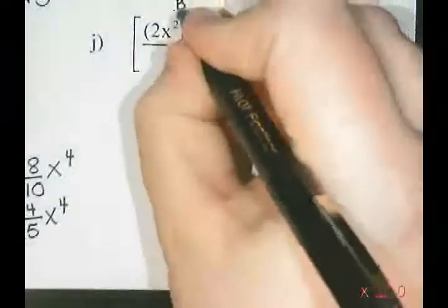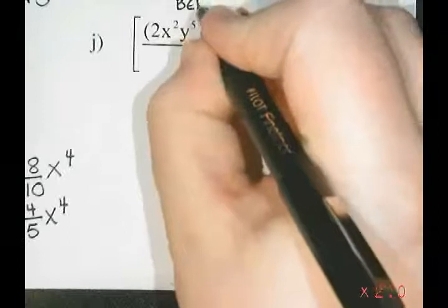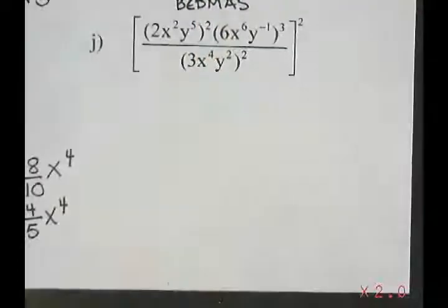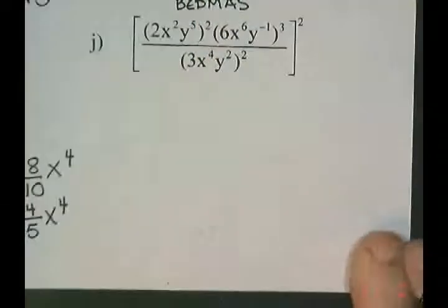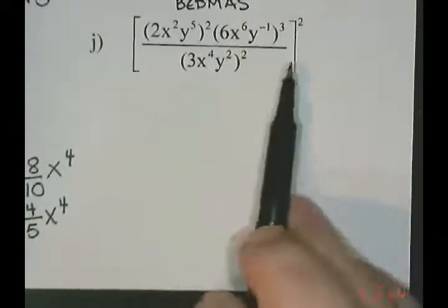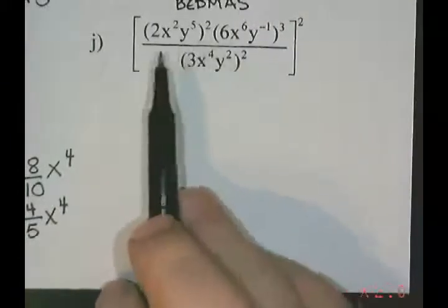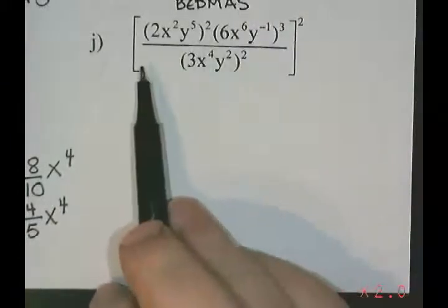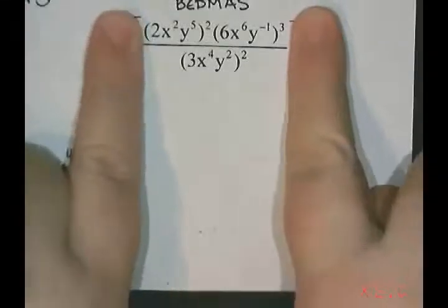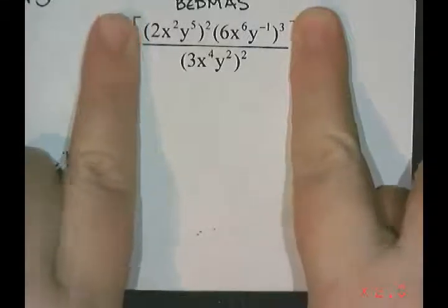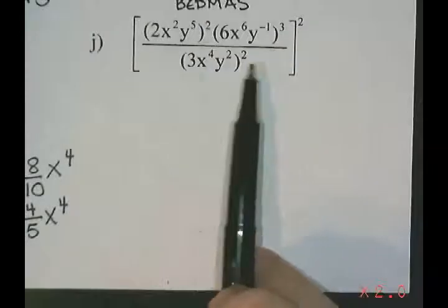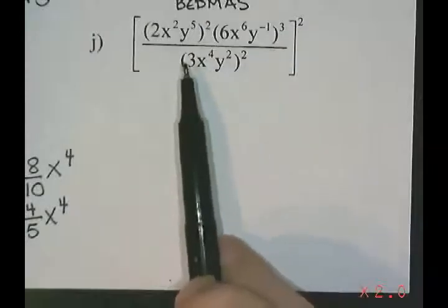So to figure out this question, I want to try to follow my BEDMAS order of operations. We always start with brackets. I do notice that there's a very large set of brackets here, so I'm going to start by working on everything that's inside that set of brackets. Inside here, we're also going to try to follow BEDMAS.